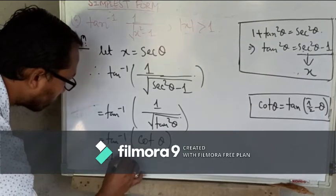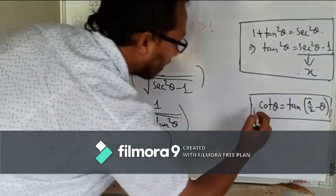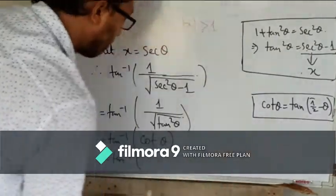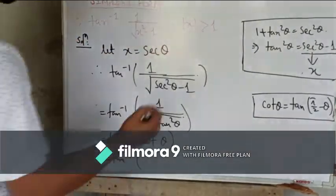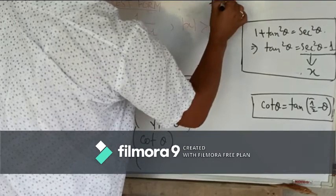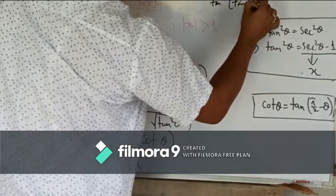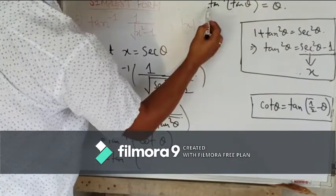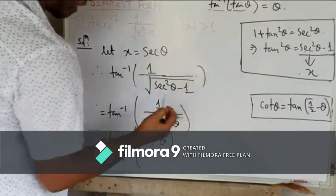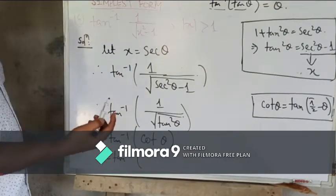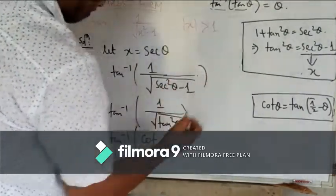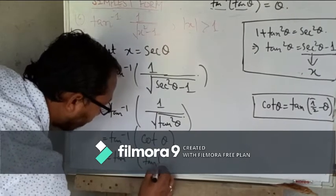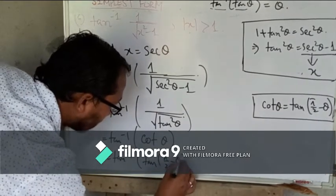Again, tan inverse of cot theta. We can write cot theta like this: as we know, cot theta equals tan of 90 minus theta. As we have to apply tan inverse of tan theta equals theta, in order to bring it to this form, as it is tan inverse, we have to write tan theta. If we write cot theta, then we cannot solve it. So we will take it like this: cot theta equals tan of 90 minus theta.